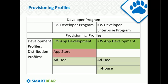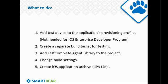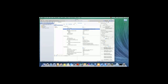The iOS App Development and ad-hoc profiles of the standard iOS Developer Program allow launching and testing of the application on a mobile device only if the respective device ID was added to the profile beforehand — this is general to iOS development, not specific to TestComplete. To prepare your iOS app for use with TestComplete, we need to: add the test device to the application's provisioning profile, create a separate build target for testing, add the TestComplete agent library to the project, tweak a few build settings, and finally create an IPA file.